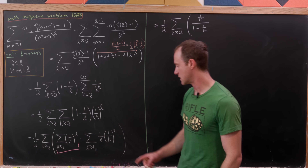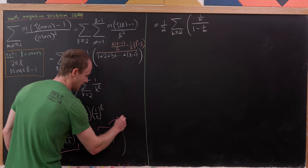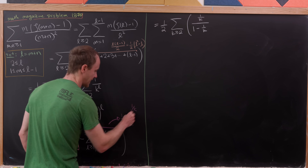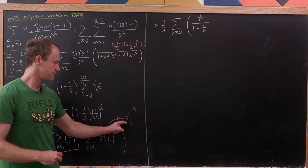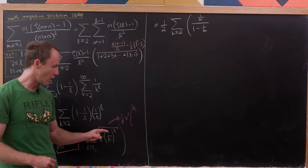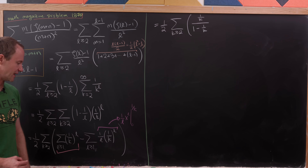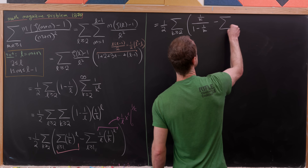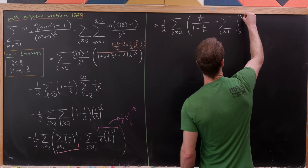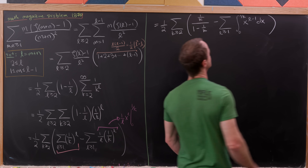For the second term, it looks like an integral has been evaluated. We can see it as 1 over l times x to the l evaluated from 0 to 1 over k — a kind of zeroth integral, where the exponent equals the denominator. Applying the Fundamental Theorem of Calculus removes the l in the denominator, giving us minus the sum as l is bigger than or equal to 1 of the integral from 0 to 1 over k of x to the l minus 1 dx.